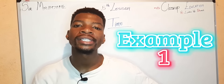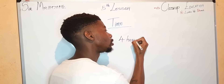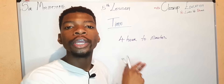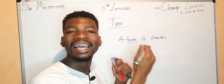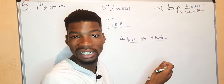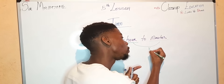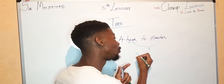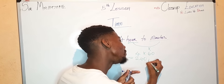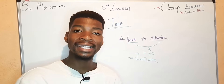Our first question: convert four hours into minutes. We know that an hour is bigger than a minute, so our matrix system tells us that when moving from a bigger to a smaller unit, we multiply. So we say four multiplied by 60 equals 240 minutes. The unit must always change.